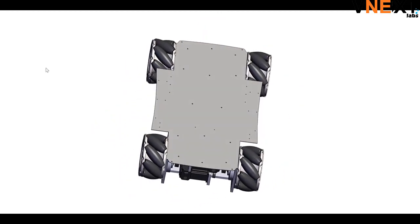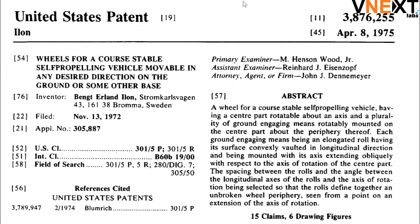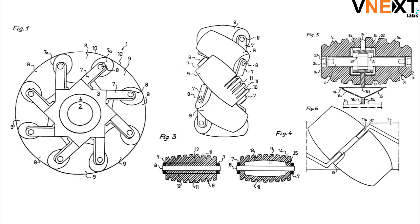Mecanum wheels are omnidirectional wheel designs that allow a mobile robot to move in any direction. It was invented by Ben Erland Ilan while working as an engineer with the Swedish company Mecanum AB and patented it in the United States on November 13, 1972. Patent number US 3876255.